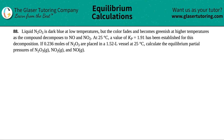Number 88. Liquid N2O3 is dark blue at low temperatures, but the color fades and becomes greenish at high temperatures as the compound decomposes to NO and NO2. At 25 degrees Celsius, a value of Kp equals 1.91 has been established for this decomposition. If 0.236 moles of N2O3 are placed in a 1.52 liter vessel at 25 degrees Celsius, calculate the equilibrium partial pressures of N2O3 gas, NO2 gas, and NO gas.